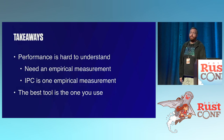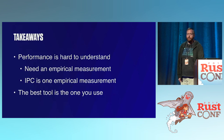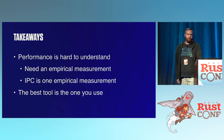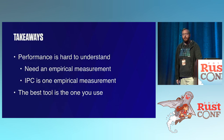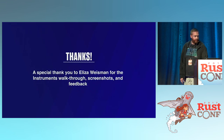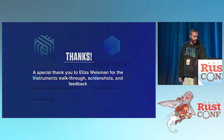Performance is hard to understand given how complex CPUs are, and there's a lot of tooling available. You really need to measure empirically — run your program and see how it does. IPC is a really great measurement to use. You can use Instruments on the Mac, which is much more powerful than people realize, Perf on Linux, and VTune. But ultimately, the best tool is the one you use on a regular basis. A special thank you to Eliza for walking me through Instruments.